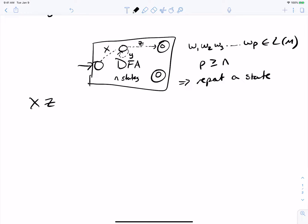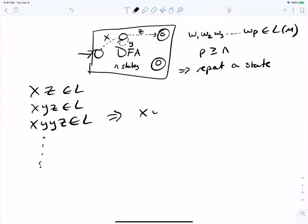We'll realize that if we look at the string xz, that just involves not going around that loop anymore, so this is also in the language. xyz is in the language also because that's the original string. But if I do xyyz, that's also in the language because that goes around the loop twice. And we can carry on like this to show that xy^i z is in L for all i at least zero.